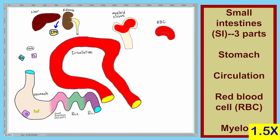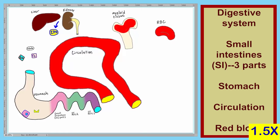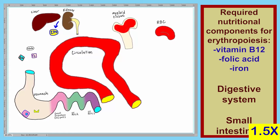Let's first describe the normal situation. Starting with the digestive system, there are several components that the myeloid tissue needs to produce red blood cells. Shown here are vitamin B12, folate, and iron. Let's start with the ingestion of these three components.